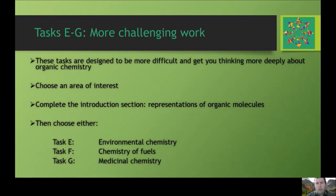Having done the four compulsory tasks, you get a choice for the fifth one — either E, F, or G. These are deliberately designed to be more challenging and to get you thinking more deeply about chemistry, and in particular about organic chemistry. You can choose whichever task you find most interesting: Task E on environmental chemistry, Task F on the chemistry of fuels, or Task G on medicinal chemistry.